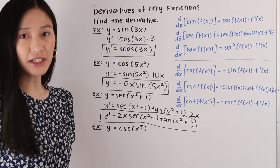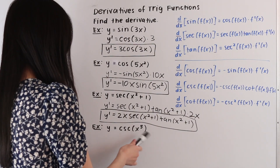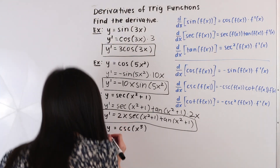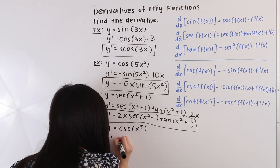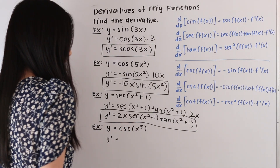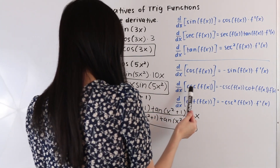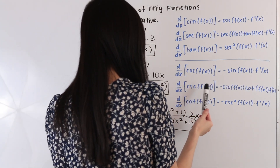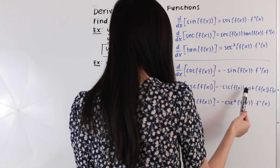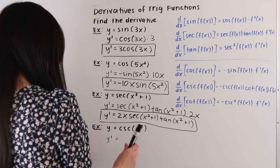So in this next example here, we have the function y is equal to cosecant of x to the fifth. So let's go ahead and take its derivative. So we have y prime is equal to, and so taking a look at our table, we see that the derivative with respect to x of cosecant of f of x is equal to negative cosecant of f of x times cotangent of f of x times f prime of x.